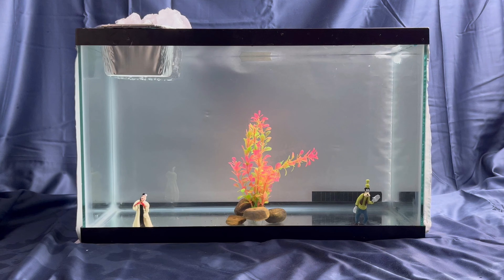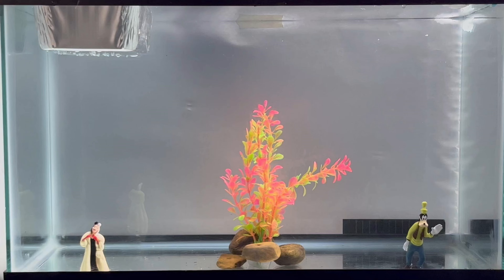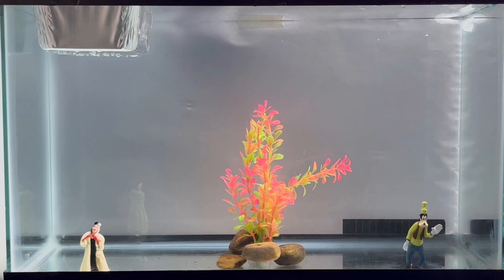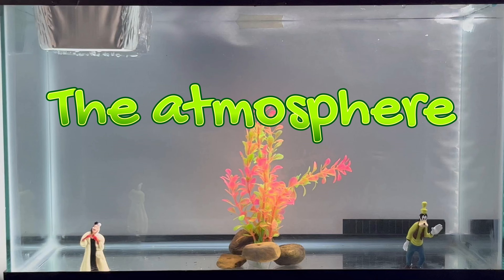Now to make things really obvious we're going to create a high pressure and a low pressure system in a fish tank. Since water and air are both fluids — things with molecules that can flow around — they kind of act in similar ways. So for today's demonstration we're going to imagine that the water is actually the atmosphere.